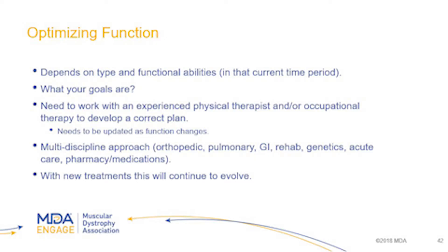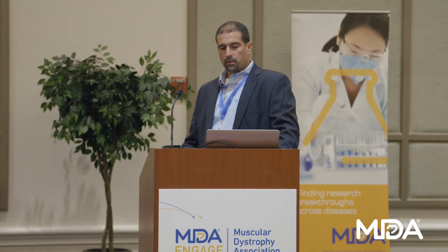This group can also use manual wheelchairs or scooters for longer distances, since fatigue can be an issue — giving them an option so they don't have to take as many rest breaks. The big factor from the PT side of the care considerations is optimizing your function, which is different for everybody. It depends on the type of SMA you have and where you are in your functional abilities at the current point in time — whether you're working on rolling over, sitting up, or standing up — and those goals will change over time.